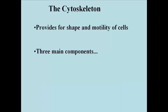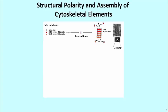The cytoskeleton is a uniquely eukaryotic phenomenon. The three main components of the cytoskeleton provide shape to cells and participate in motility.